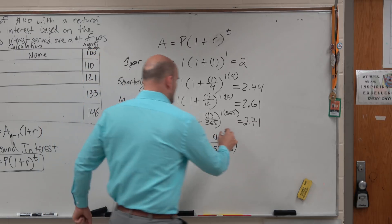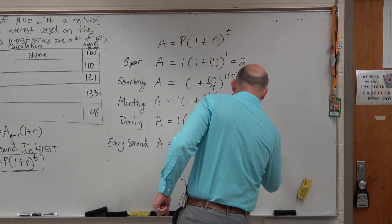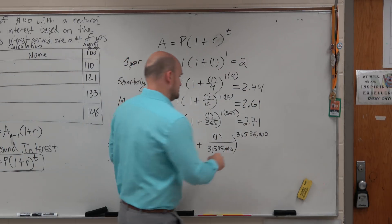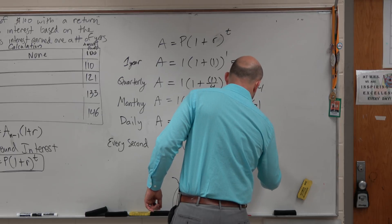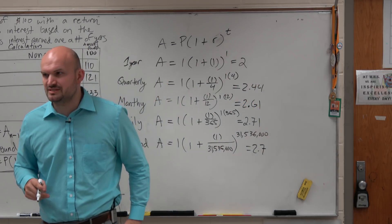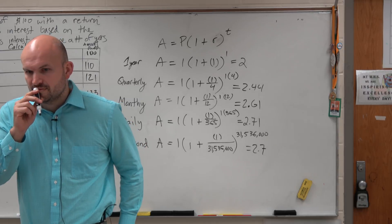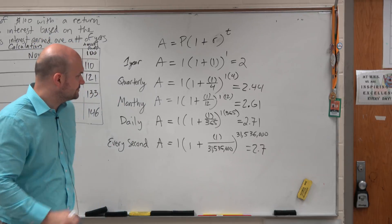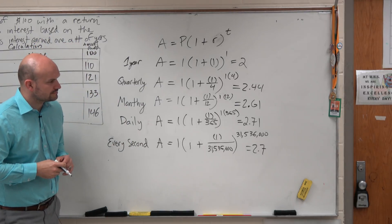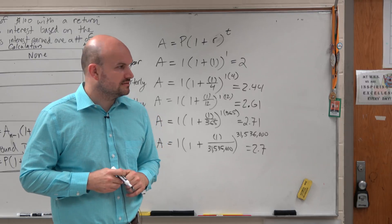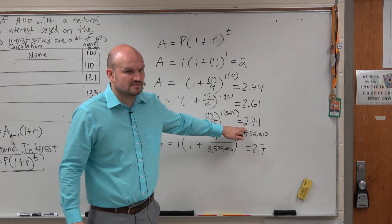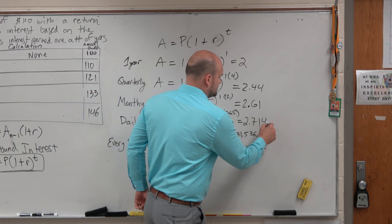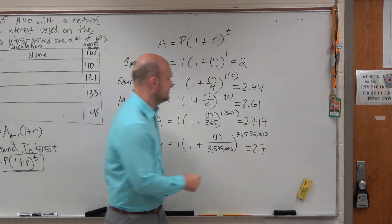There you go. And if you guys calculate this — for daily we get 2.71. And compounding every second gets a little bit more with a graphing calculator: 2.7, and then 2.71, 1, 1, 8. So we can see it going 2.71 — every second, millisecond, nanosecond.